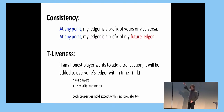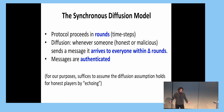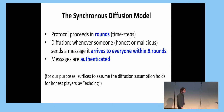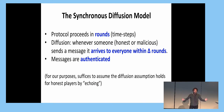This notion of liveness is very strong — it is often called synchronous liveness. To achieve something like this we need to consider a synchronous model of communication, where we allow people to communicate in rounds. We have the guarantee that whenever a good node sends a message it gets to everybody within some maximum delay delta. Whenever somebody sends a message, either good or bad, it gets delivered to everybody within delta time steps.